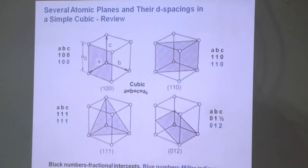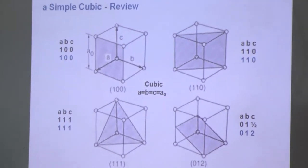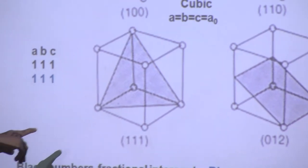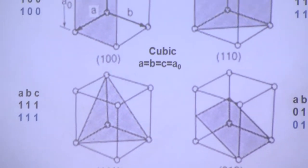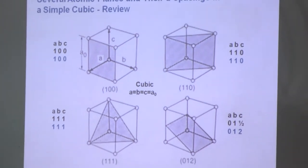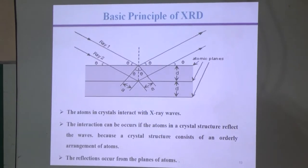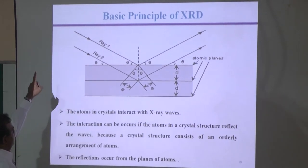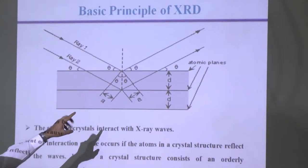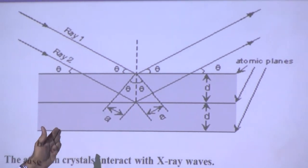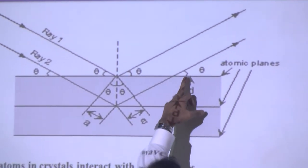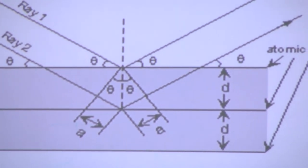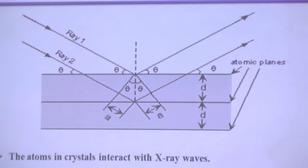For example, the 1,0,0 plane, the 1,1,0 plane, the 0,1,2 plane, and the 1,1,1 plane each give corresponding peaks in the XRD pattern. When X-rays come in, they get diffracted based on the location of atoms, interacting with various planes at various theta angles. Based on the Scherrer equation you can calculate interatomic distances and determine the structure. The Bragg equation is: n·lambda = 2d·sin(theta).